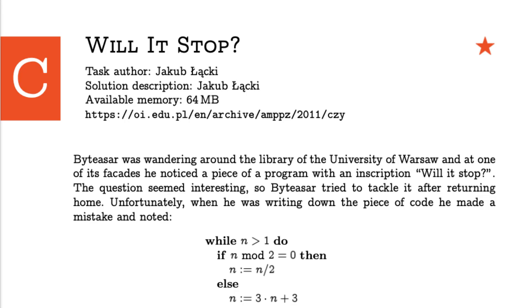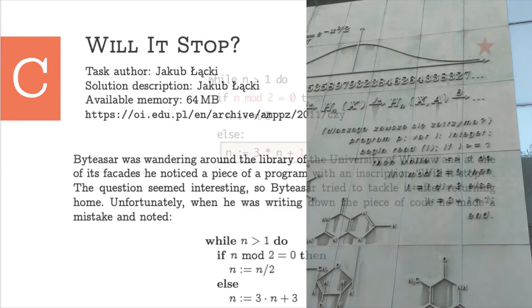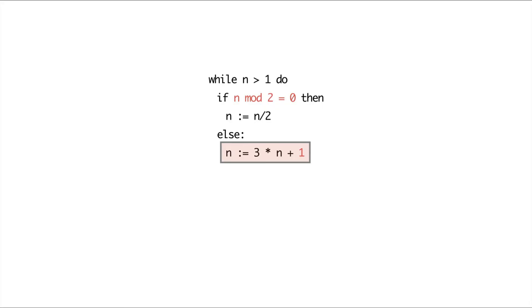But this might make you curious about a couple of things. First of all, is there such an inscription at the facades of the library of the University of Warsaw? And it turns out that there is indeed such an inscription. Did Baitassar actually make a mistake while noting it down? It turns out that, yes, the original inscription on the facade of the library is a slightly different code snippet. It's a really small mistake that Baitassar made while noting down this piece of code. Instead of a plus 3 in the else statement, we have a plus 1. That's it. That is the only difference.